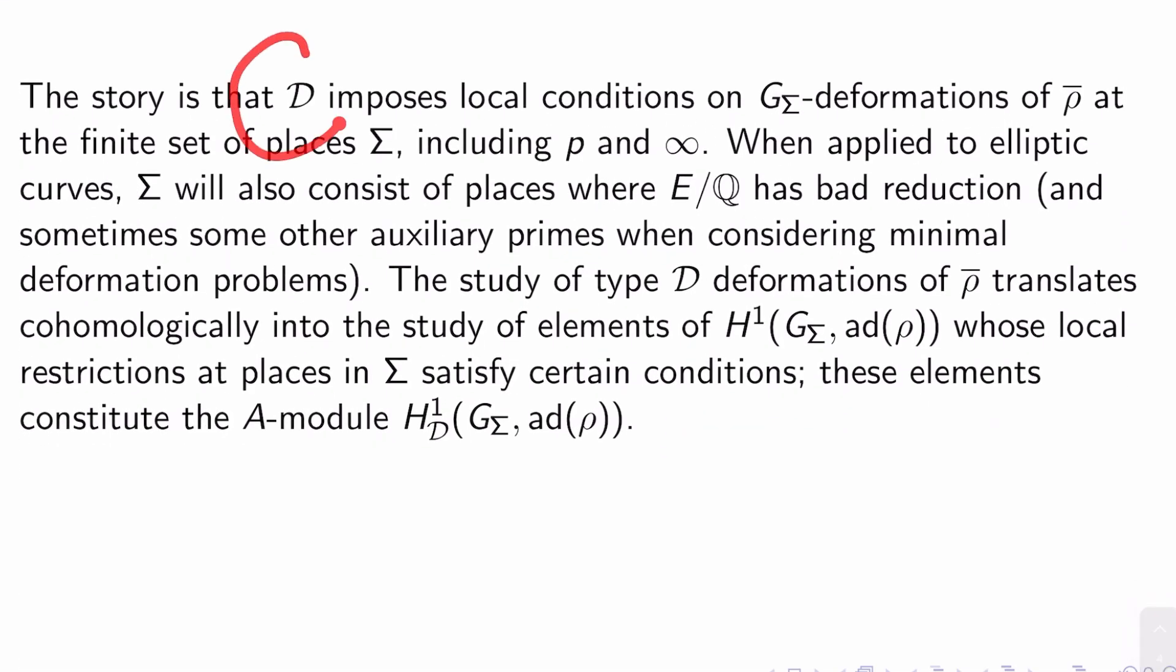The story goes that this D imposes local conditions on G_sigma deformations of rho bar at the finite set of places sigma, including P and infinity. We talked about this kind of at length as far back as chapter four. When applied to elliptic curves, sigma will always actually consist of places where E over Q has bad reduction, but it also may contain other primes, which we call auxiliary primes.